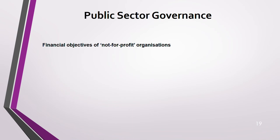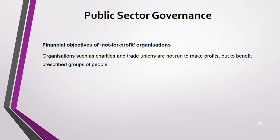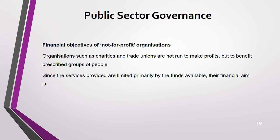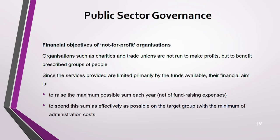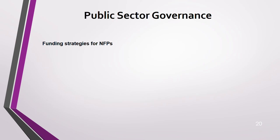Organizations like trade unions and charities are not there to make profit but to benefit a prescribed group of people. The services they provide are limited by the funds available. Their financial aims are: first, to raise the maximum possible sum each year net of fundraising expenses; and second, to spend that sum as efficiently and effectively as possible on the target group, with the minimum of administration costs.